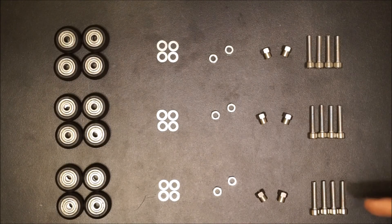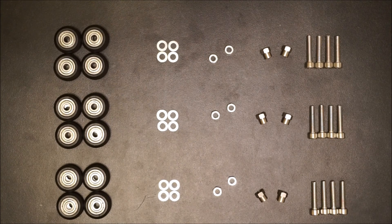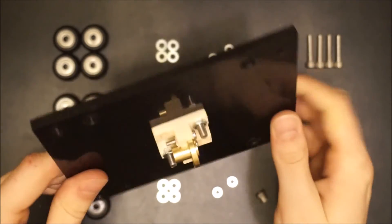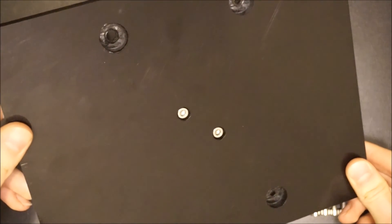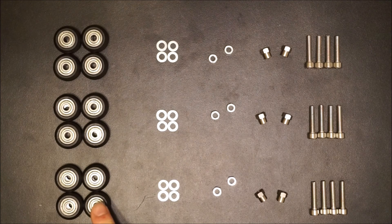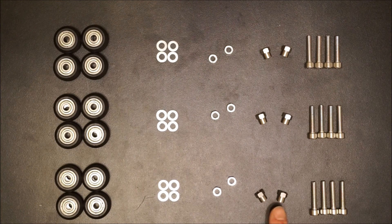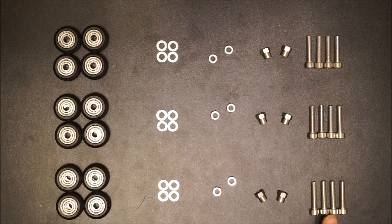Now you'll be attaching the V-groove bearings to the gantries. There will be three sets for each axis on the machine. Two will mount to the XZ gantry and one will mount to the Y gantry. These sets will consist of four V-groove bearings, four M5 washers, two M5 nuts, two eccentric nuts, and four M5 bolts.